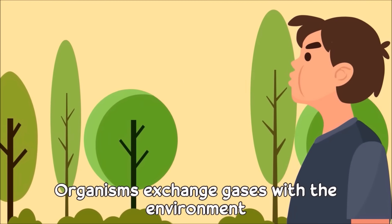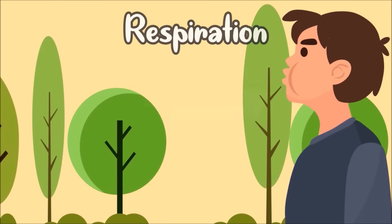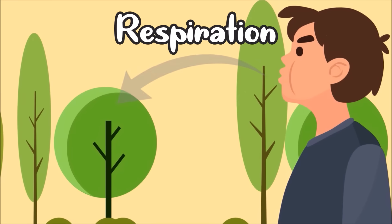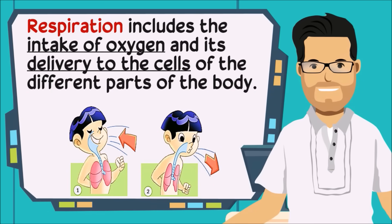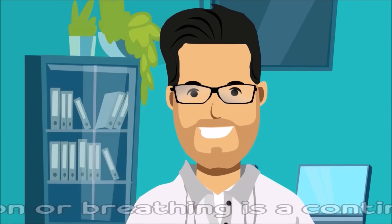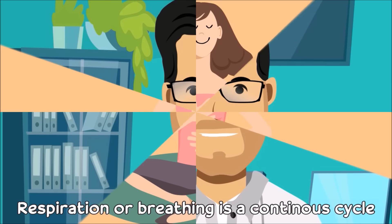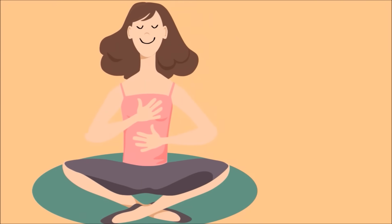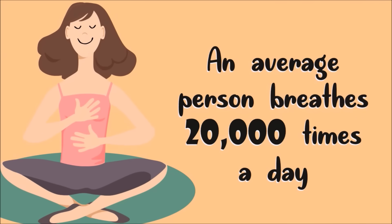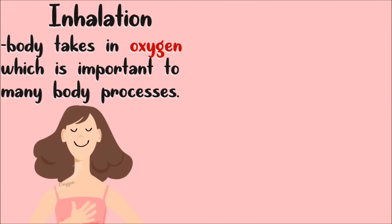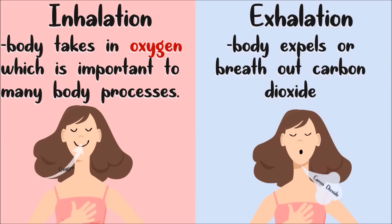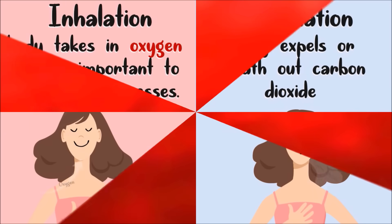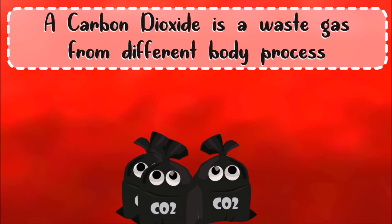Organisms exchange gases with the environment. This process is called respiration. Respiration includes the intake of oxygen and its delivery to the cells of the different parts of the body. Respiration, or breathing, is a continuous cycle. An average person breathes 20,000 times a day. During inhalation, the body takes in oxygen, which is important to many body processes. During exhalation, our body expels carbon dioxide — a waste gas from different body processes.